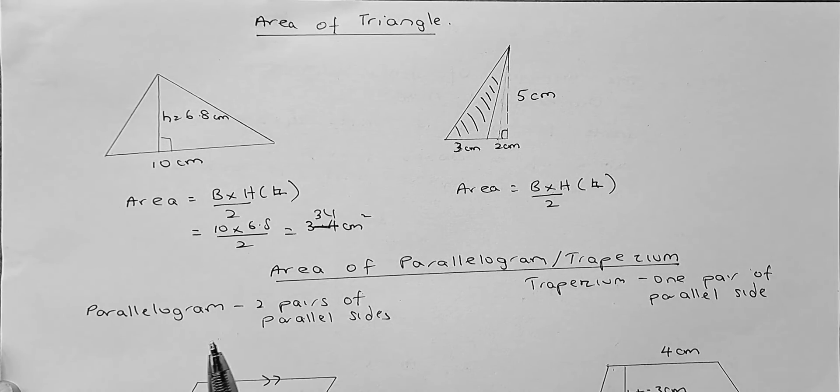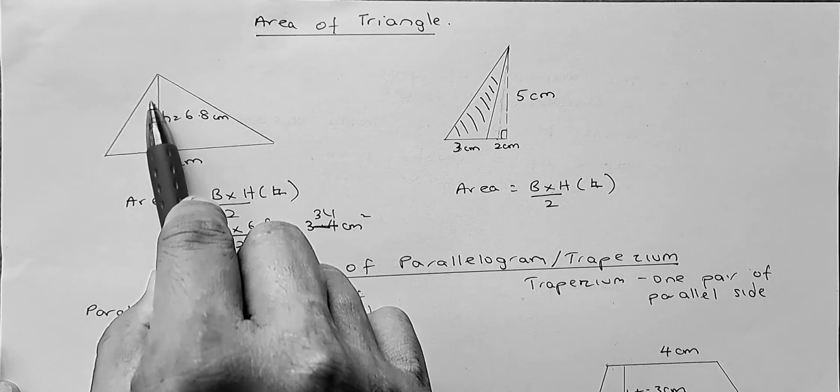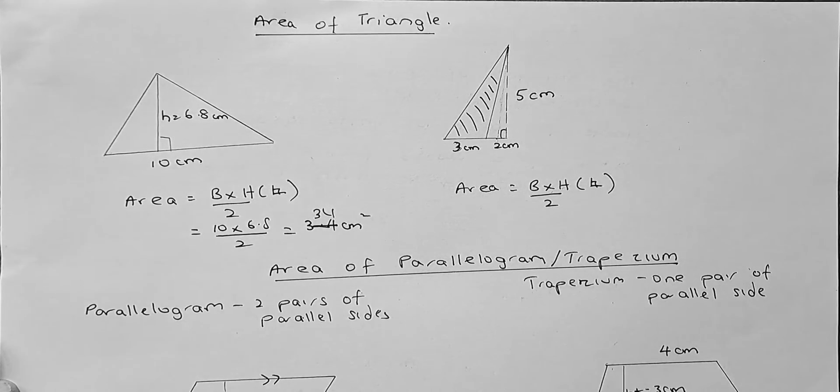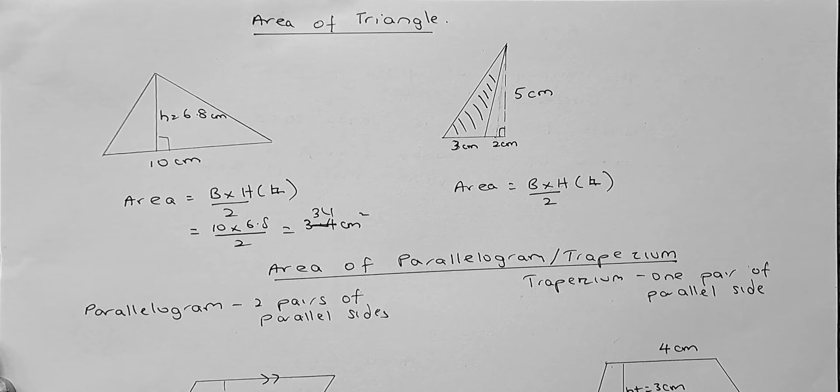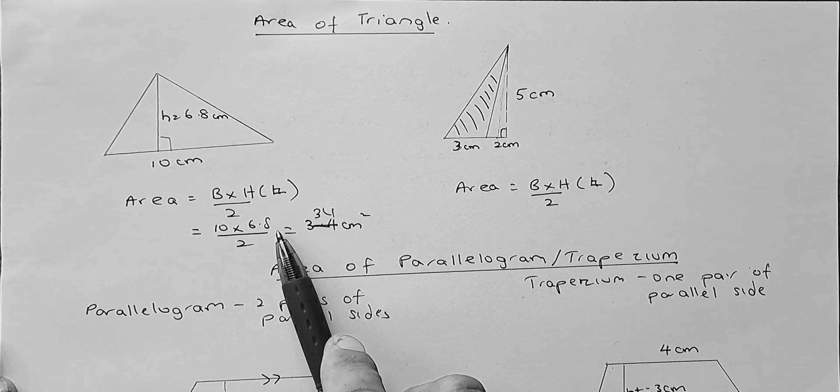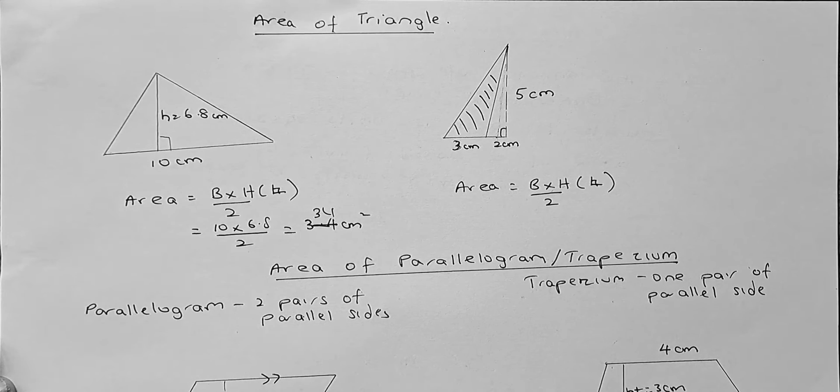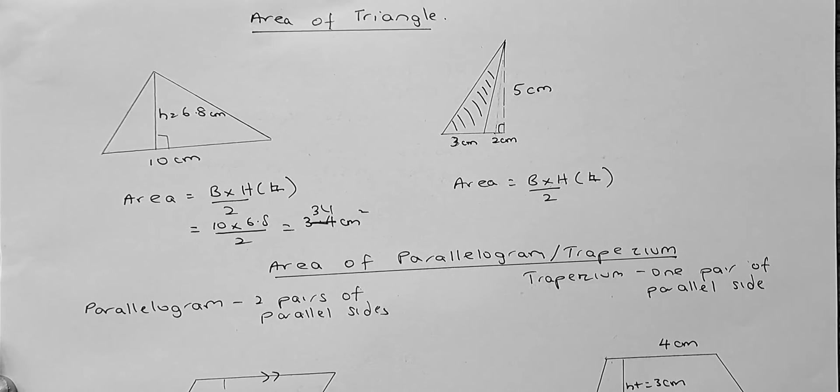So, for example, in this triangle, the base is 10 and the perpendicular height, which is 90 degrees to the base, is 6.8. So, to calculate the area, you take 10 times 6.8 and then you divide by 2 and the answer is going to be 34 cm squared.